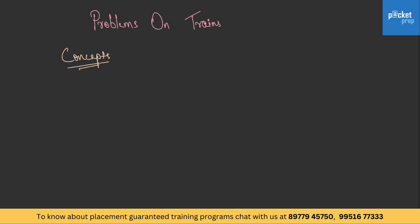Let us first learn how we convert kilometers per hour to meters per second. Let us assume that a train is traveling with speed A and its units are given in kilometers per hour. Multiplying A with 5/18 converts it from kilometers per hour to meters per second. This is the only formula we have to remember.